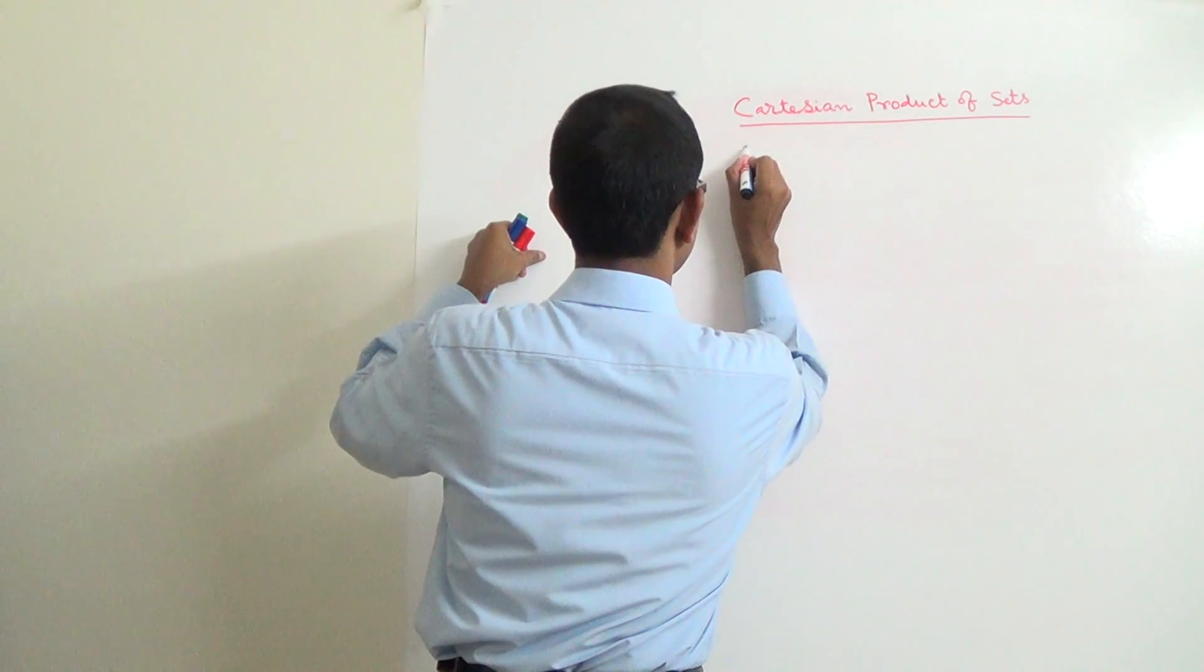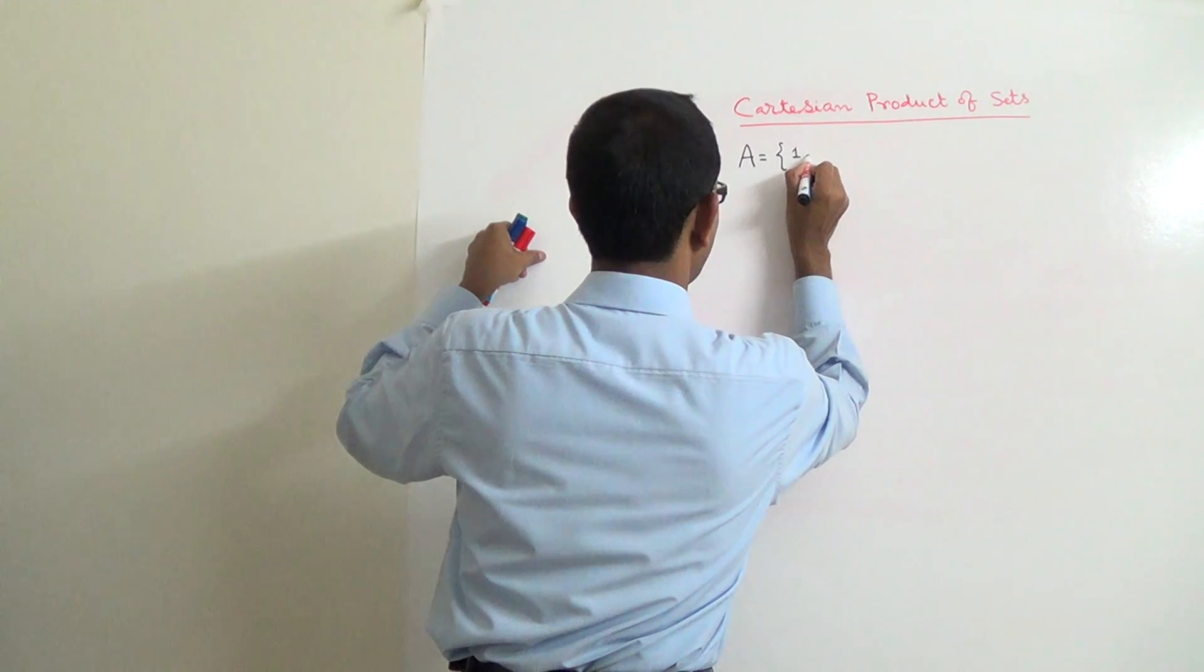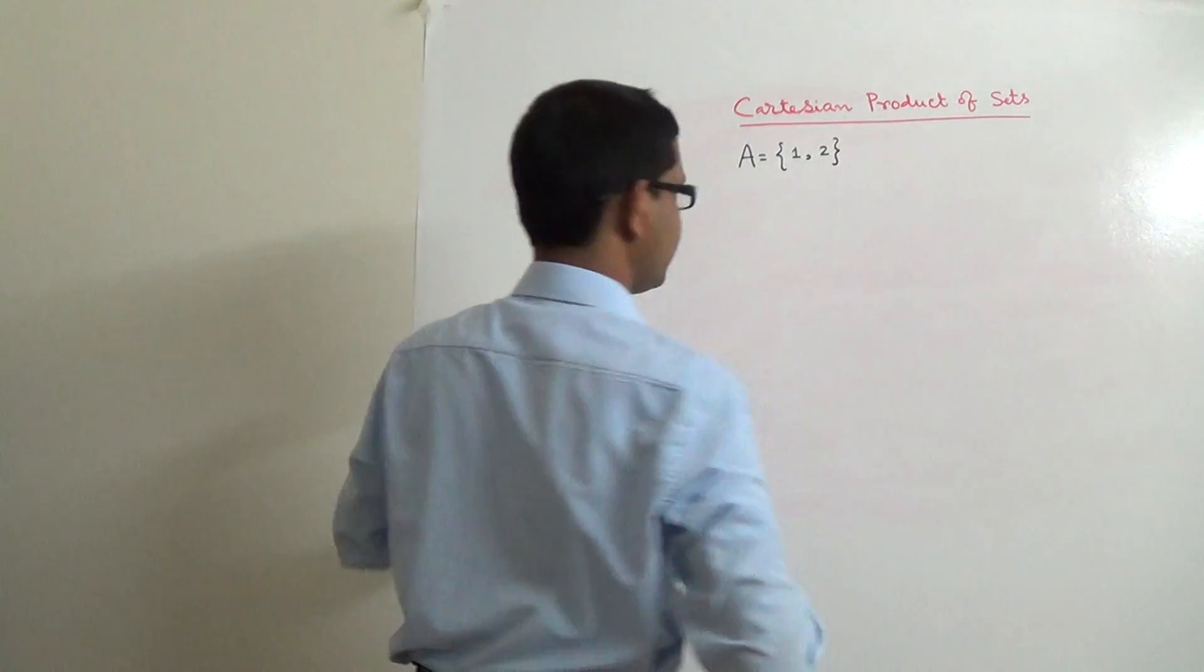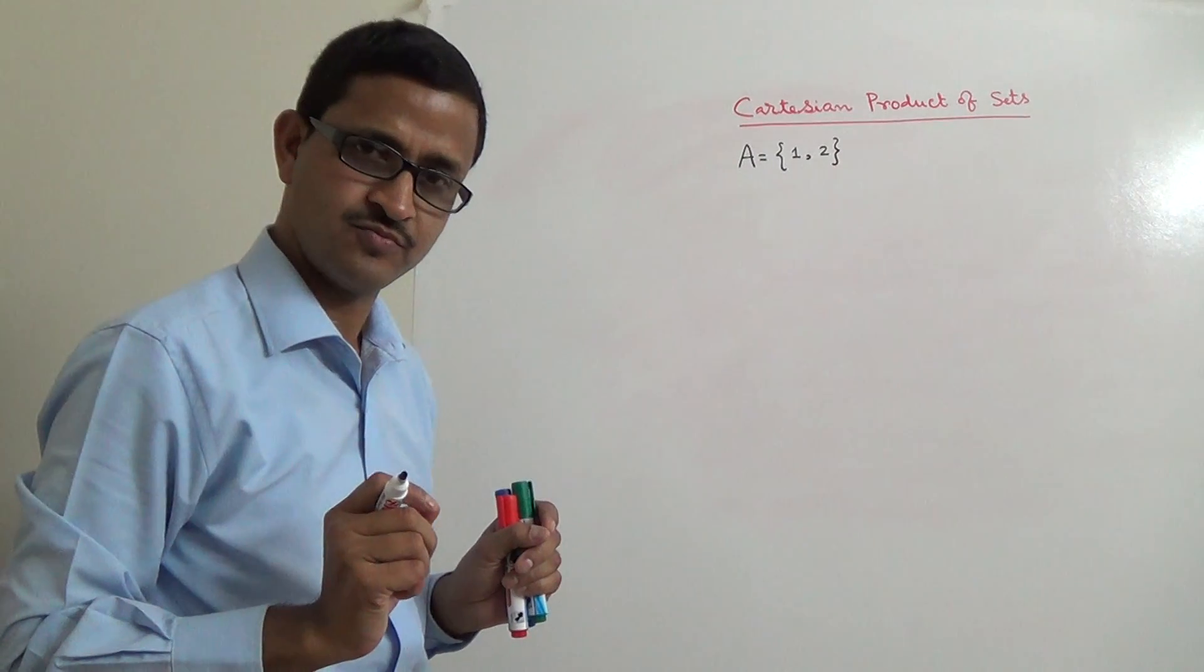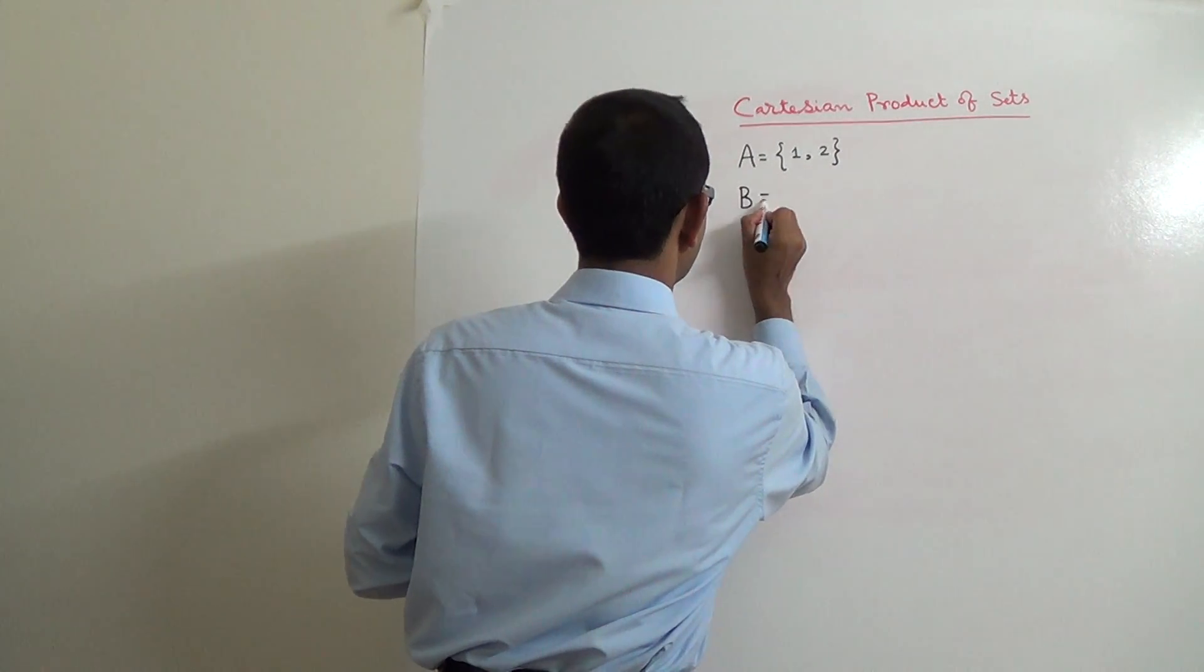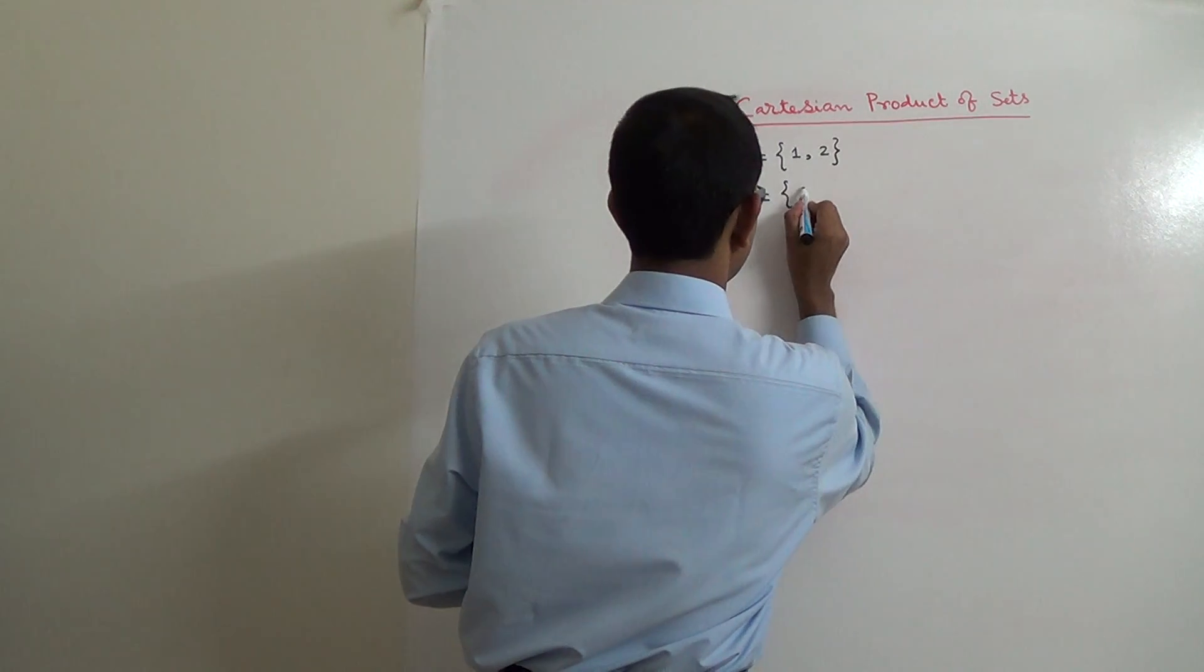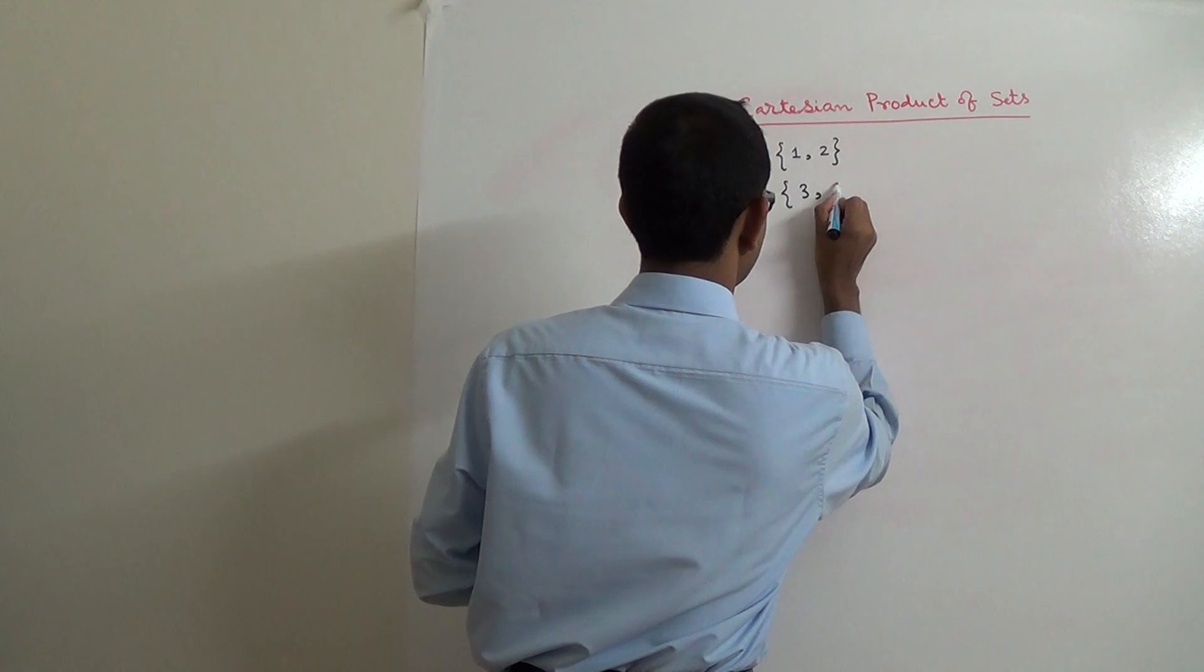So, we have two sets. The set A contains 1 and 2. Two numbers and the set B contains numbers called 3 and 4.